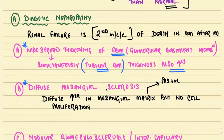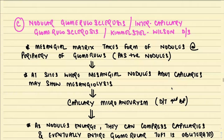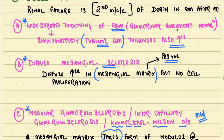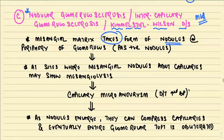Second, there is diffuse mesangial sclerosis — a diffuse increase in mesangial matrix that is PAS-positive without an increase in cell proliferation. The most characteristic and important exam finding is nodular glomerulosclerosis, also called intercapillary glomerulosclerosis, or the Kimmelstiel-Wilson (KW) lesion. The mesangial matrix takes the form of nodules, representing the nodular form of hyalinization. These are PAS-positive nodules.